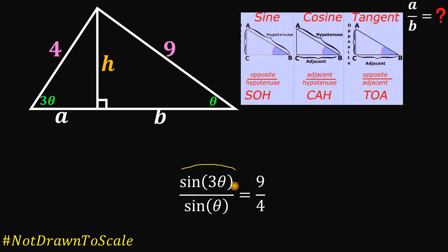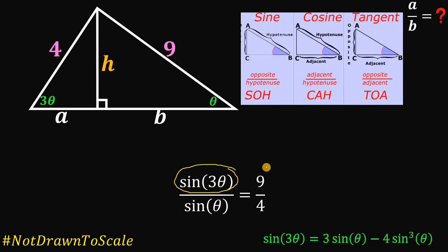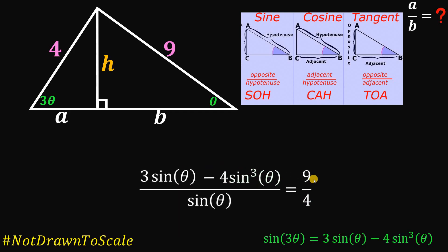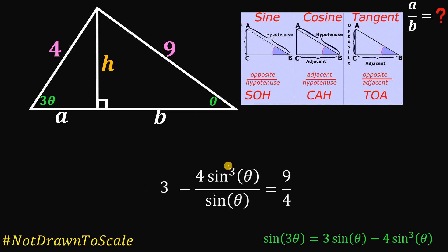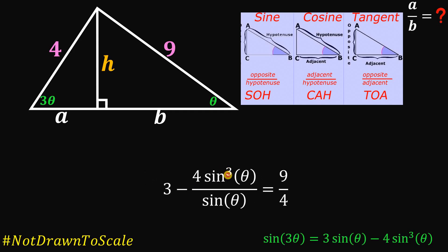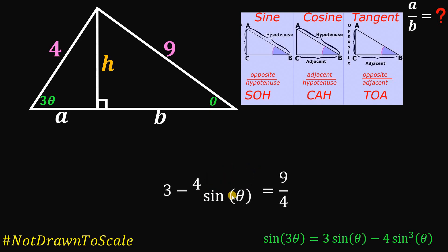Now we use the triple angle identity for sine: sine of 3 theta equals 3 sine theta minus 4 sine cubed theta. We replace the numerator with this identity, then split the fraction using the property of similar fractions. The sine theta terms cancel, leaving 3 minus 4 sine squared theta equals 9 over 4.